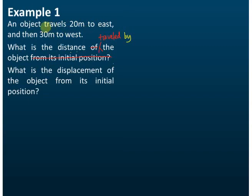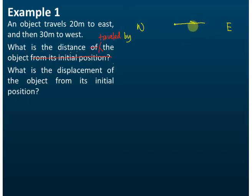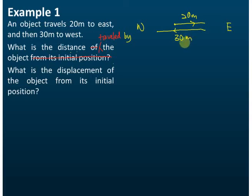Now let's see the question. An object travels 20 meters to the east and then 30 meters to the west. Let's say this is west and this is east. The object travels 20 meters to the east initially, and after that it travels 30 meters to the west.